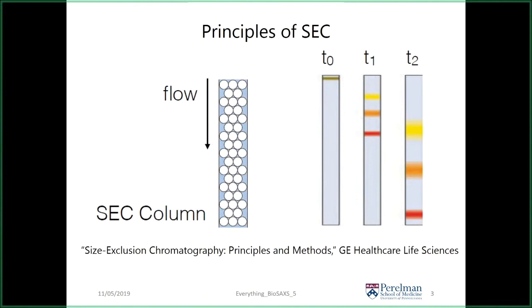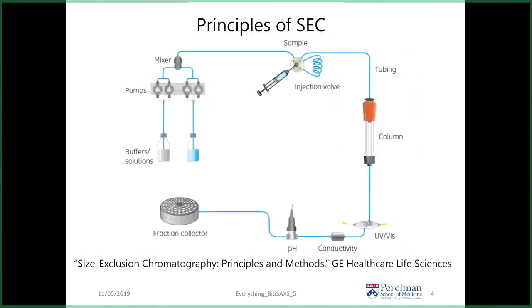During the experiment, small things are retained longer than larger things. Large things don't get caught up in the nooks and crannies of the column matrix — they elute first. Small things stick along the surface and the nooks and crannies, getting retained and eluting at much later times. This allows you to resolve different species from your initial starting mixture — it's the simplest biophysical experiment you can carry out in the lab.